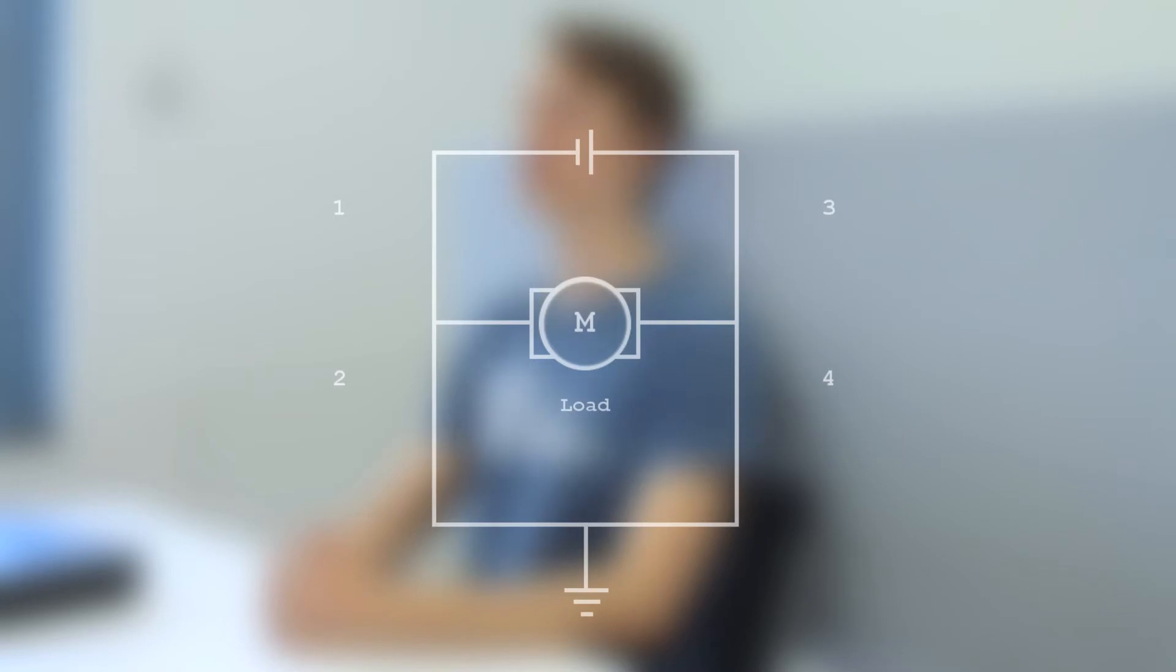The H-Bridge circuit consists of four switches placed around a load. In the circuit diagram the supply voltage is at the top, the load in the middle and ground at the bottom.